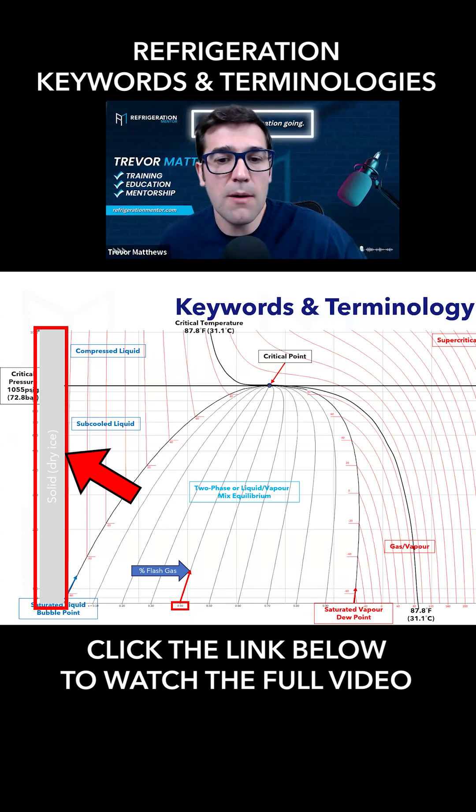Inside a system, though, our pressures are always above that triple point, it's called, to create dry ice. When we're above the triple point, we don't have to worry about dry ice.